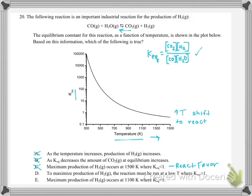D says to maximize production of H₂, your reaction must be run at a low temperature where K_eq is greater than 1. This makes sense — when K_eq is big, we'll have more products around, and H₂ is a product. E says maximum production of H₂ occurs at 1100 K where K equals 1 — that's false, because that's where products equal reactants, which is by no means maximizing. So the answer is D.